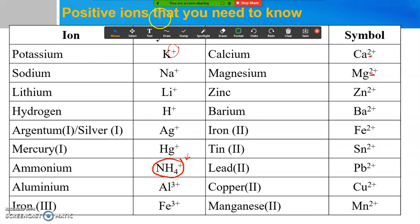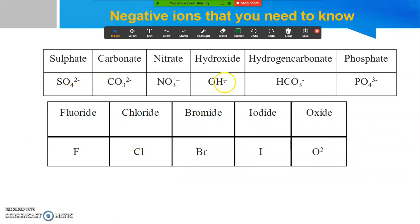For the non-metals, these are the examples of the polyatomic ions for the non-metal, for the negative ions.